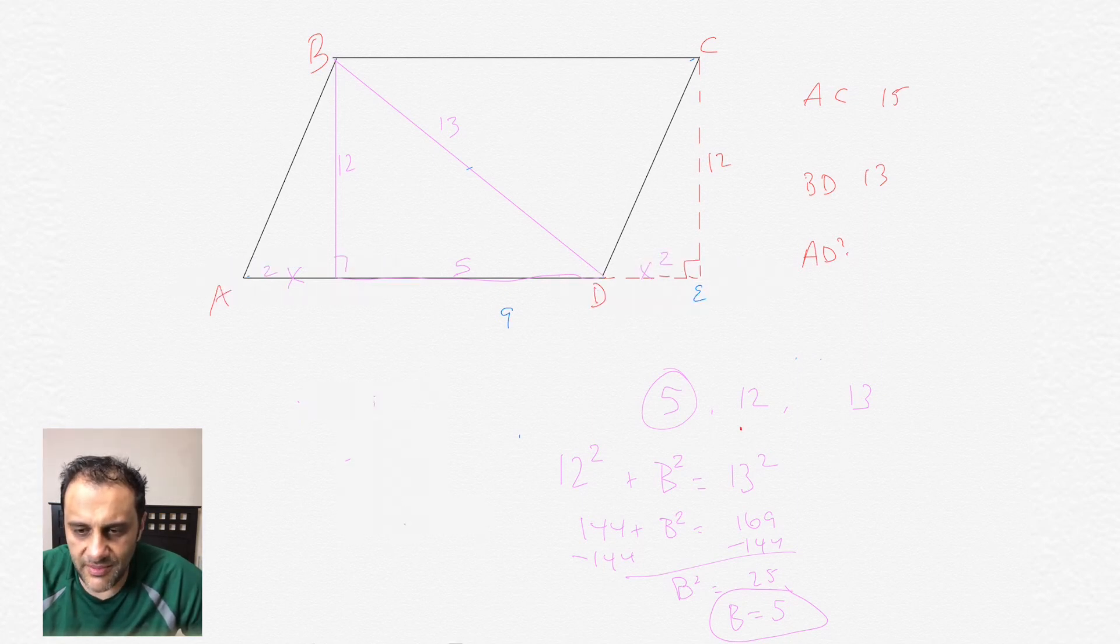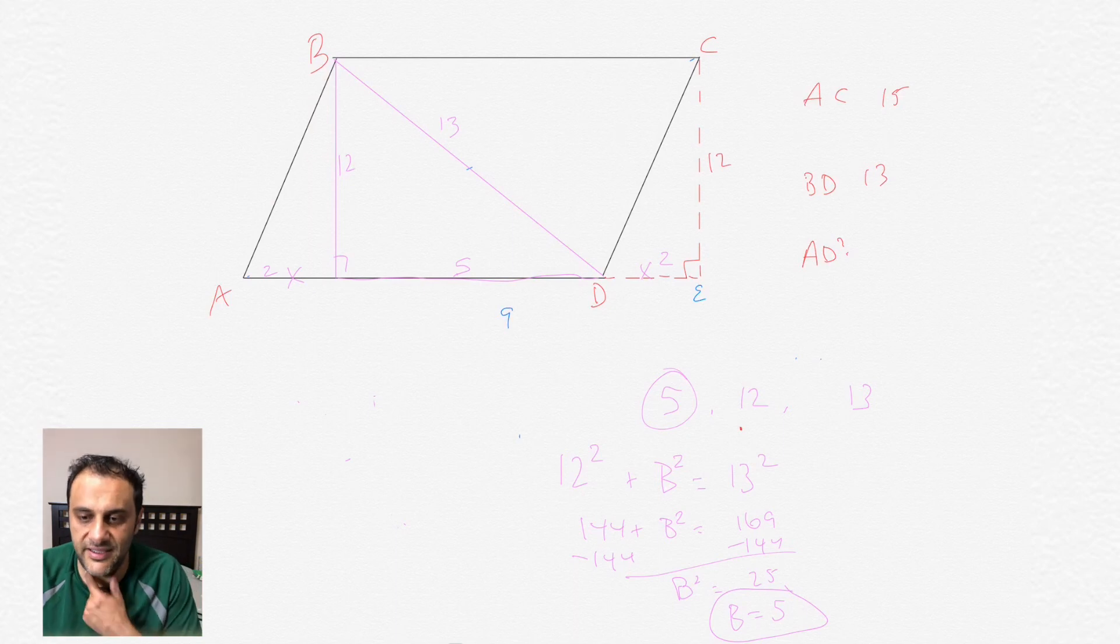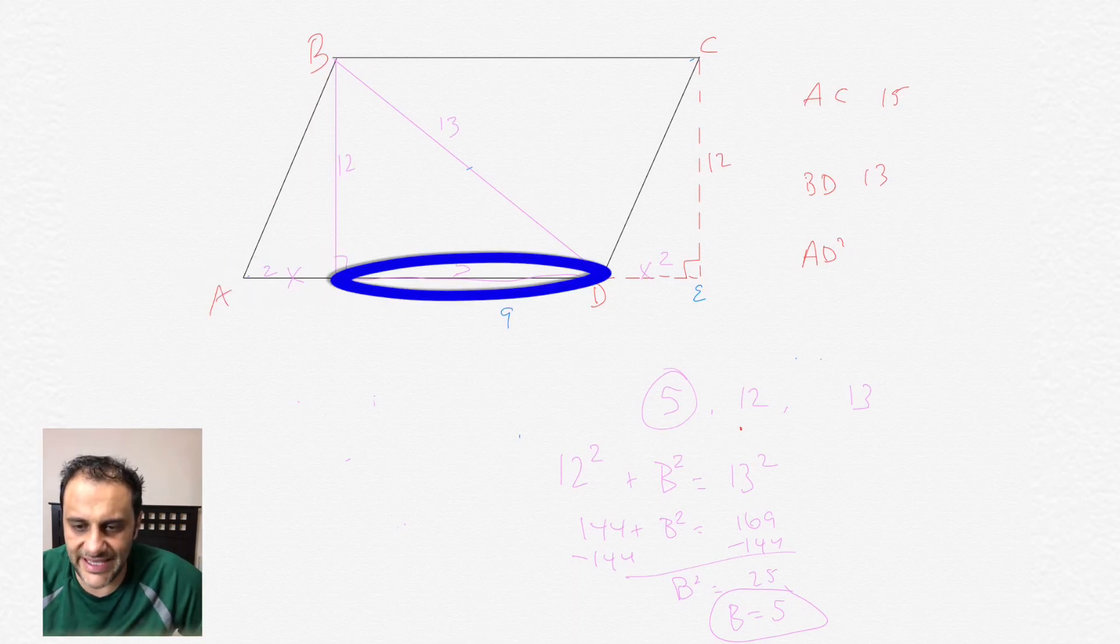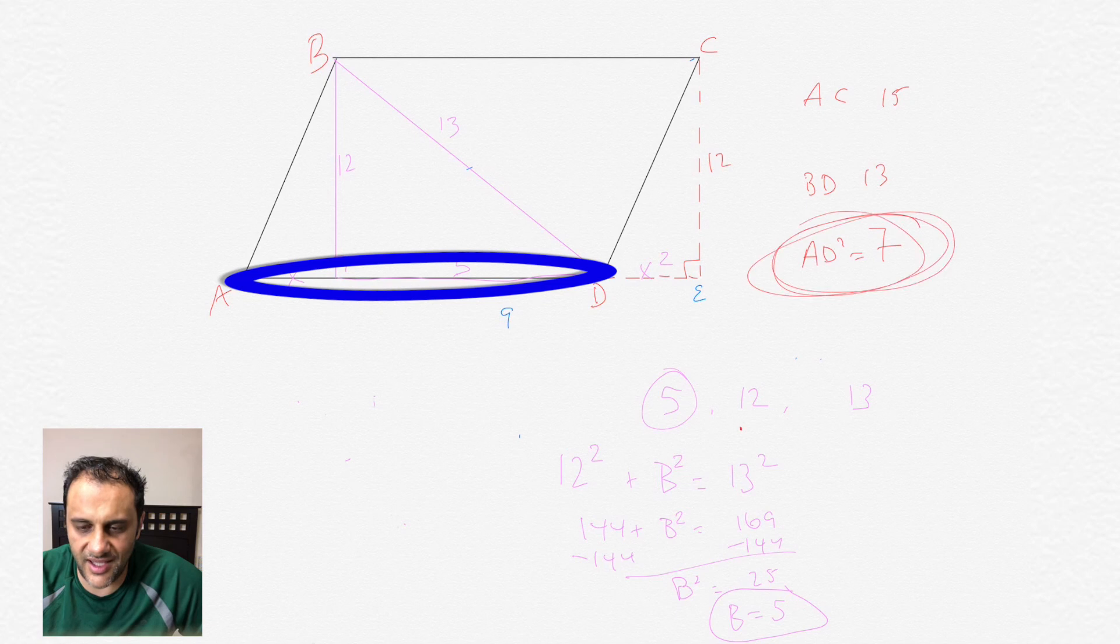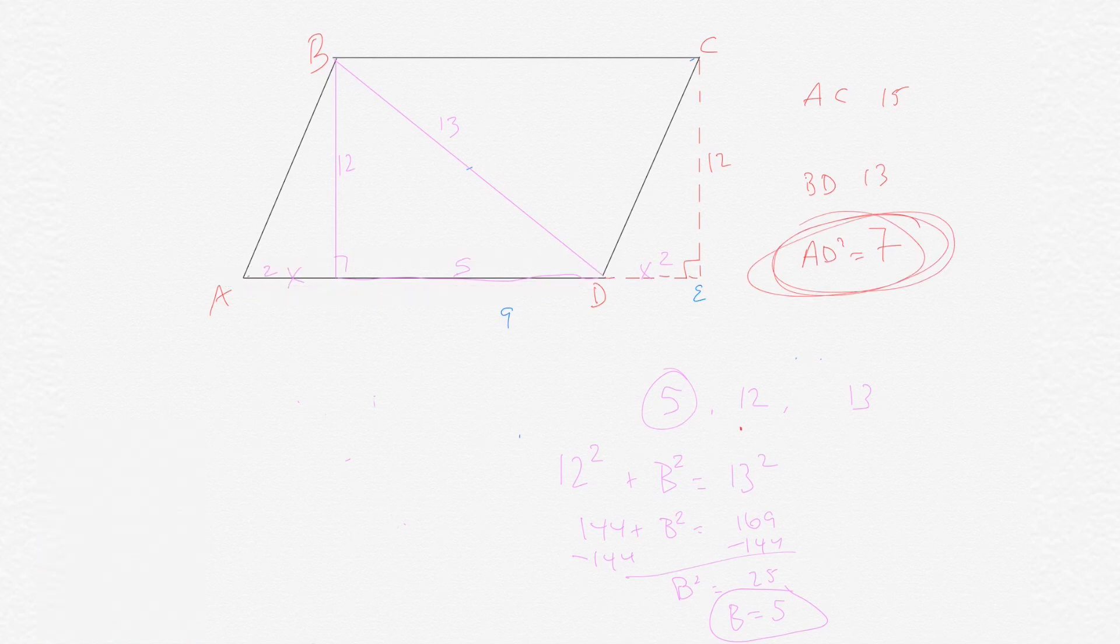Now, we should be able to calculate AD, right? Because we have a 2 there and a 5, so 2 plus 5 is 7. So that is the length of AD is 7. Line segment AD is 7, and that is the base of the parallelogram.